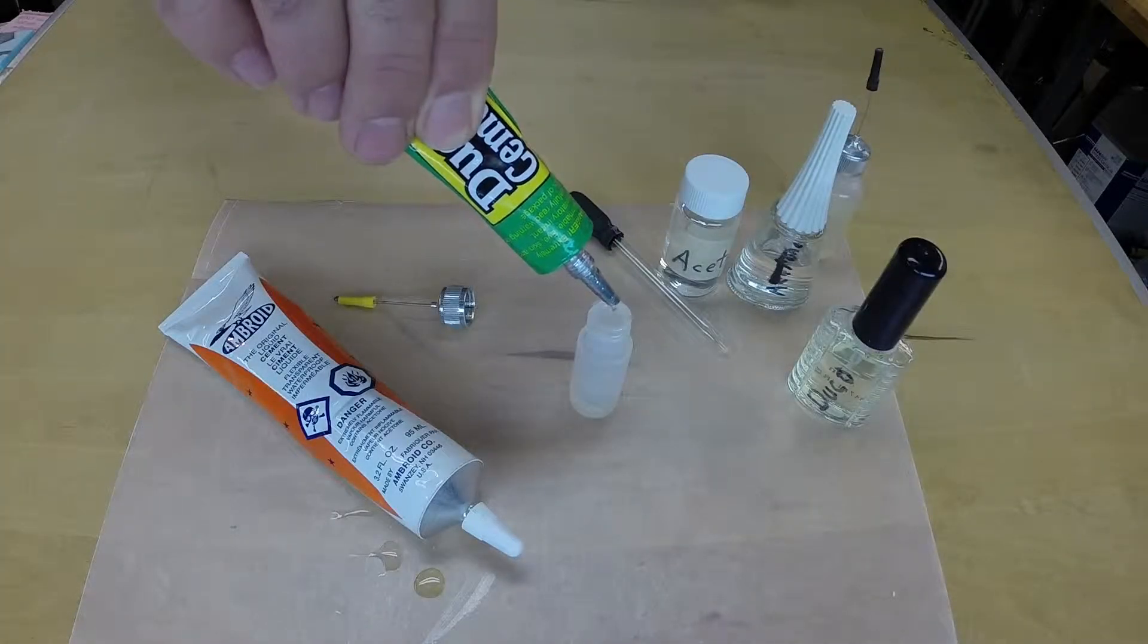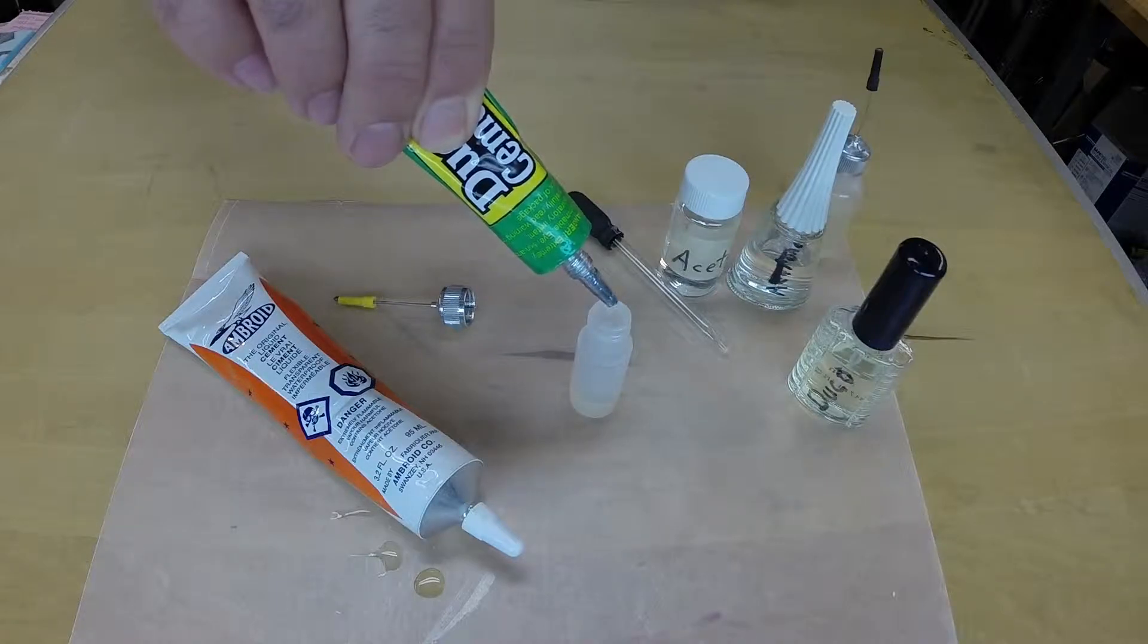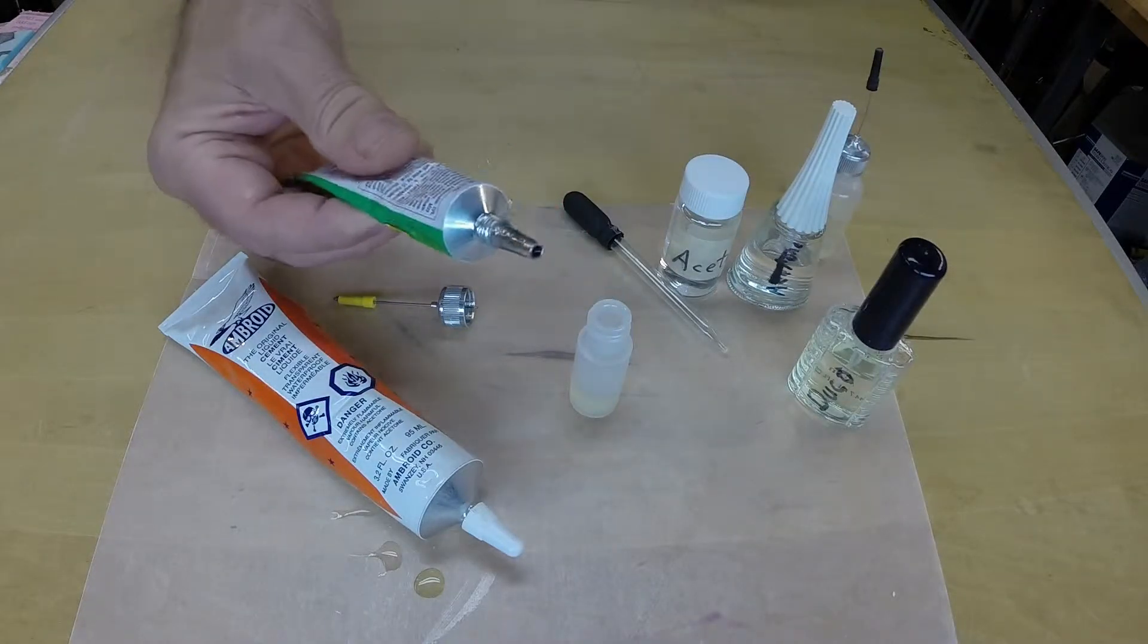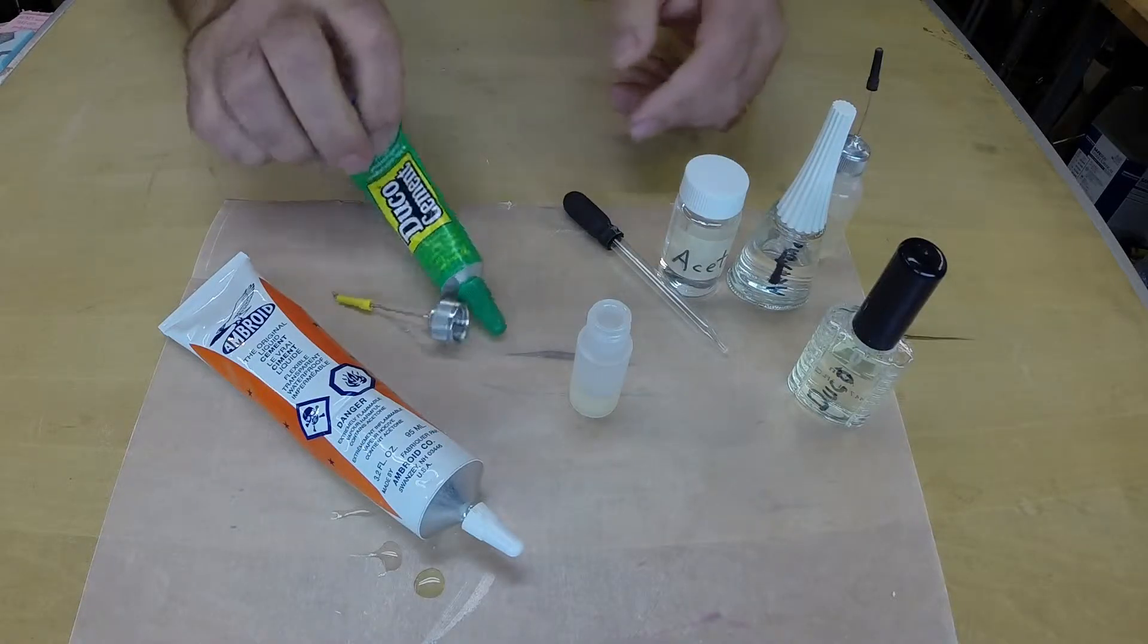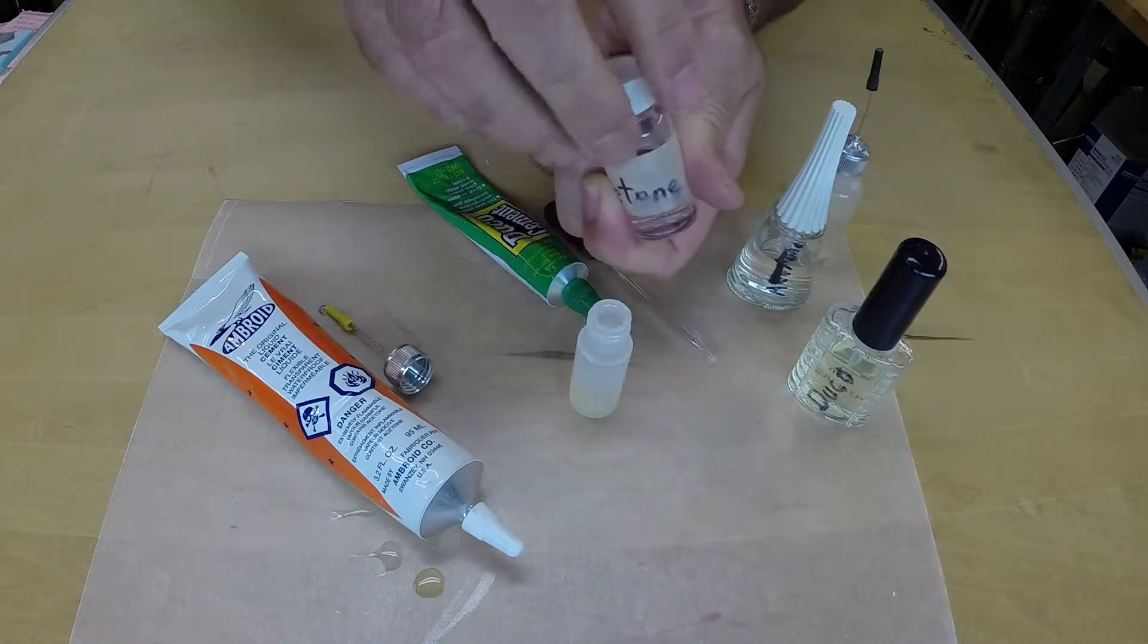Second, it needs to be thinned or diluted with approximately equal amounts of acetone. Ensure there is sufficient ventilation when working with acetone. There is no need to purchase a quart can of acetone. A small bottle of acetone-based nail polish remover will be enough for dozens of models.